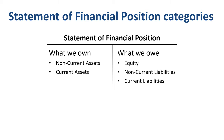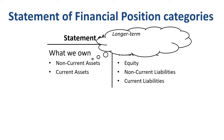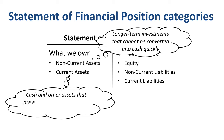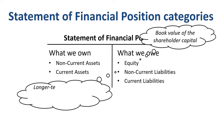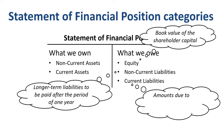Non-current assets are longer-term investments that cannot be converted into cash quickly. Current assets are cash and other assets that are expected to be converted into cash within a year. Equity on the balance sheet is the book value of the shareholder capital. Non-current liabilities are amounts owed that are to be paid after the period of one year. Current liabilities are amounts due to be paid to creditors within 12 months.